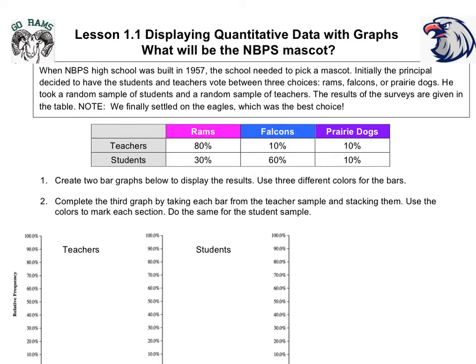We are coding the teachers and students who voted for the rams in pink, the teachers and students who voted for the falcons in blue, and the teachers and students who voted for the prairie dogs in purple. What we want to do now is, number one, create two bar graphs below to display the results, using three different colors for the bars. We are going to have a bar graph for the teachers and a separate bar graph for the students.